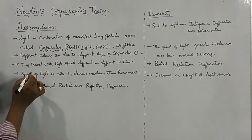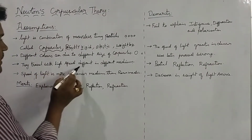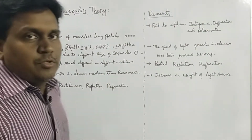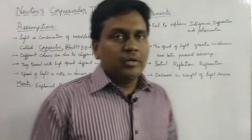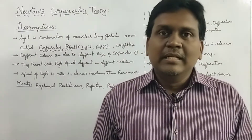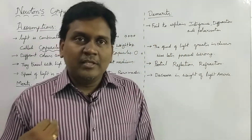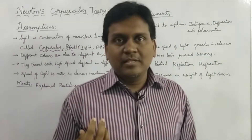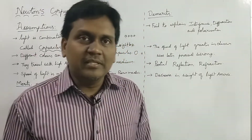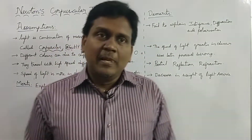Coming to the other assumption: the corpuscles travel with high speed, different in different mediums. We know that is the property of light — in denser media the speed has one velocity, and in rarer medium the speed has another velocity. So he also assumed like that; the speed of light varies from medium to medium.